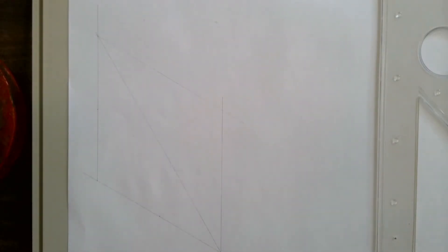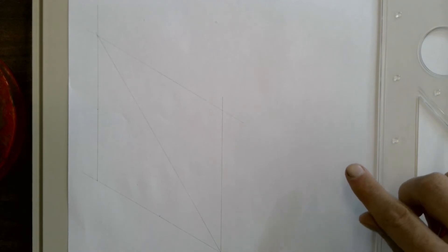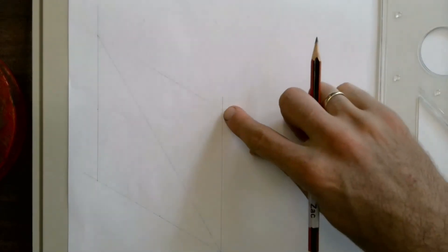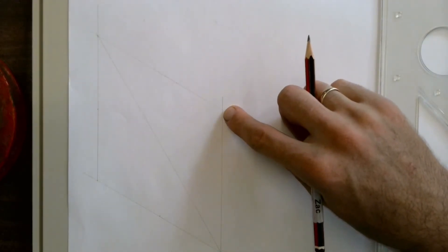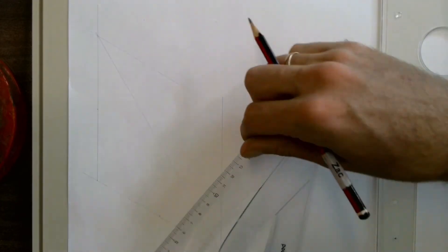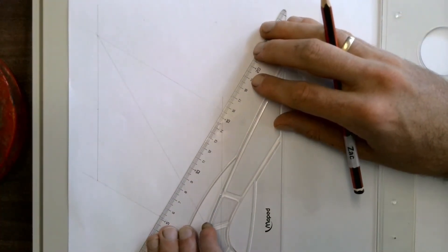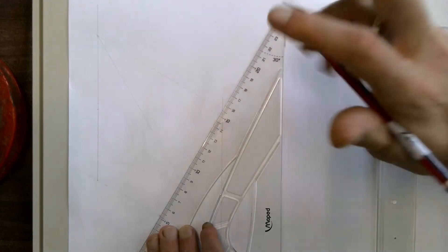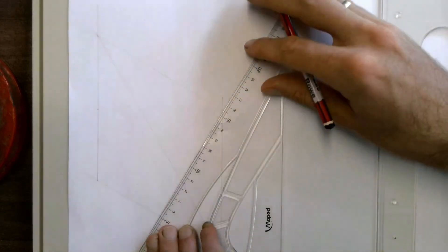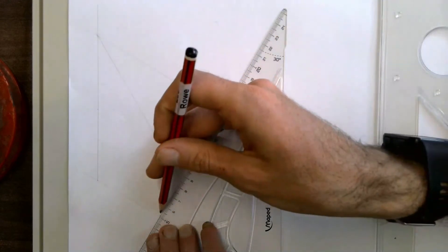Now draw a line from the obtuse corner of the square to meet with each of the center points you have found. And again, be accurate.